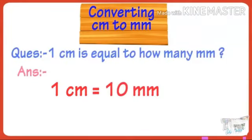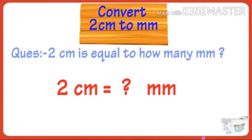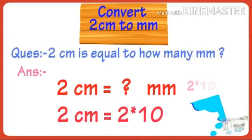Let's see some examples. 1 centimeter into millimeter — it is a higher unit into lower unit, so we multiply by 10. Therefore, 1 centimeter equals 10 millimeters. 2 centimeters into millimeters: we multiply by 10, so 2 centimeters equals 20 millimeters.